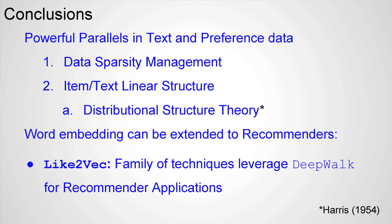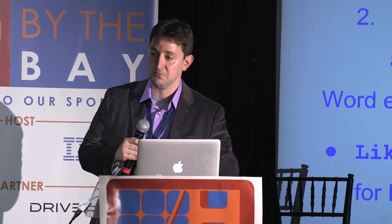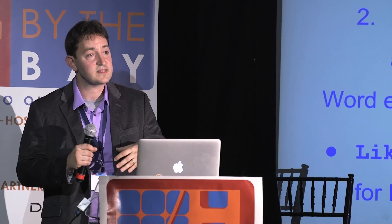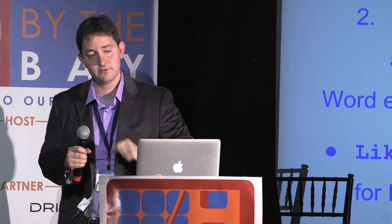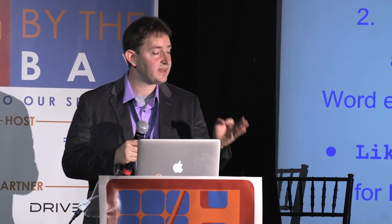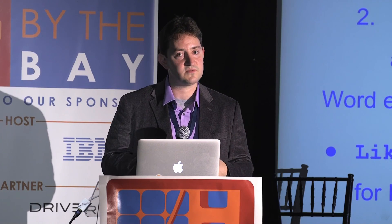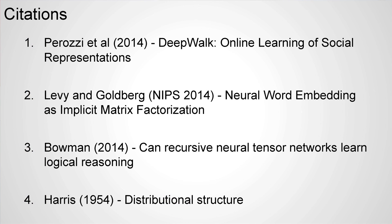To wrap up with conclusions: there are powerful parallels in text and preference data. LikeToVec is very powerful with data sparsity management, taking advantage of the linear structure which seems to exist both for item-user and for text — going back to distributional structure theory for word embeddings. We have taken huge advances seen with Word2Vec and similar neural word embeddings and applied them to the user-item representation for recommenders. We've presented the LikeToVec algorithm and initial results showing how it measures up to traditional recommender methods — very promising. Thank you very much to the team: Marvin Burton, David Oat, Mike Uhlin, and Adam Gibson, who are all part of this project.